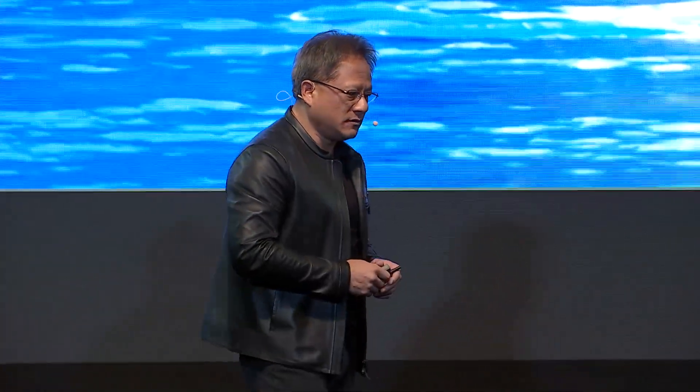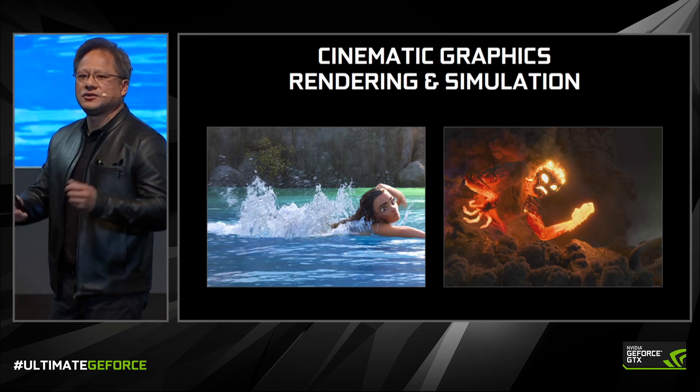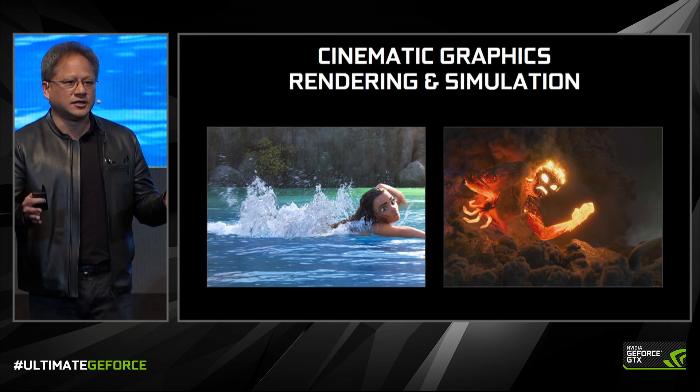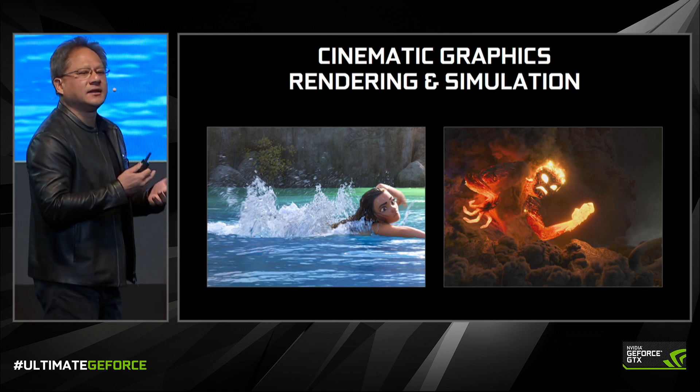One of our goals is to create cinematic graphics in real time. When you take a look at movies today, it's not just computer graphics, shaders and geometry and lighting and shadows. In order to make the cinematic experience realistic, it has to obey the laws of physics. Before you render it, you have to simulate the world. Simulation, physics simulation, environmental simulation and computer graphics rendering go hand in hand.